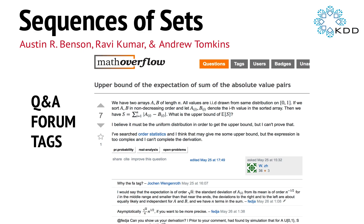We also see sequences of sets on question and answer forums like Stack Exchange websites — Math Overflow, Stack Overflow. Here on Math Overflow, somebody asked a question and annotated it with three tags: the probability tag, real analysis tag, and open problems tag. We look at the set of tags that a given user applies to their questions over time as a sequence, and look at the collection of these sequences over users.